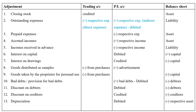This summary table shows all the adjustments covered: closing stock is credited to the trading account and shown on the asset side of the balance sheet. The table helps you recollect the treatment for each adjustment seen in this video. I hope you found this video useful. Thank you for watching.